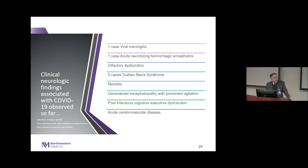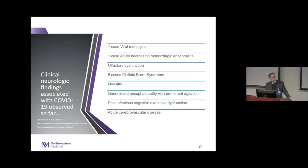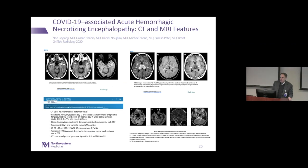We've been waiting for a deluge of post-viral Guillain-Barré patients — we haven't seen it yet. There are five cases reported out of Italy: three were demyelinating, two were axonal. Unfortunately the axonal forms have not done well. One case report that got the most attention came out of Henry Ford — acute hemorrhagic necrotizing encephalopathy with notable MRI features. Viral meningitis has also been documented.